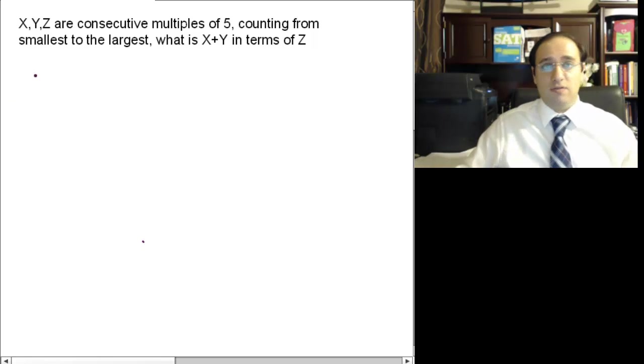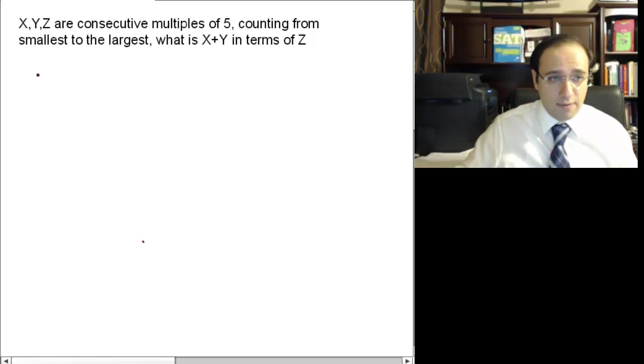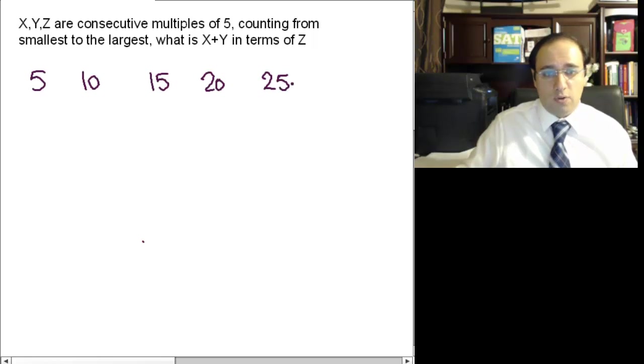So first thing, what are consecutive numbers? They're numbers that are after each other in order. They are multiples of 5. So 5, then 10, then 15, 20, 25, and so on. These are multiples of 5.